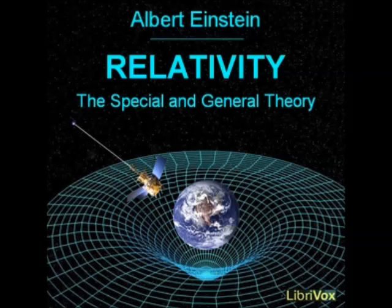Section 27: The space-time continuum of the general theory of relativity is not a Euclidean continuum. In the first part of this book, we were able to make use of space-time coordinates, which allowed of a simple and direct physical interpretation, and which, according to section 26, can be regarded as four-dimensional Cartesian coordinates. This was possible on the basis of the law of the constancy of the velocity of light. But according to section 21, the general theory of relativity cannot retain this law.